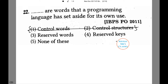Third is reserve words and fourth is reserve keys. The third option is the correct answer, because reserve words are specific to each and every program. It helps each and every program recognize a given set of commands. Thus when you use those words, the language knows what command is to be done.